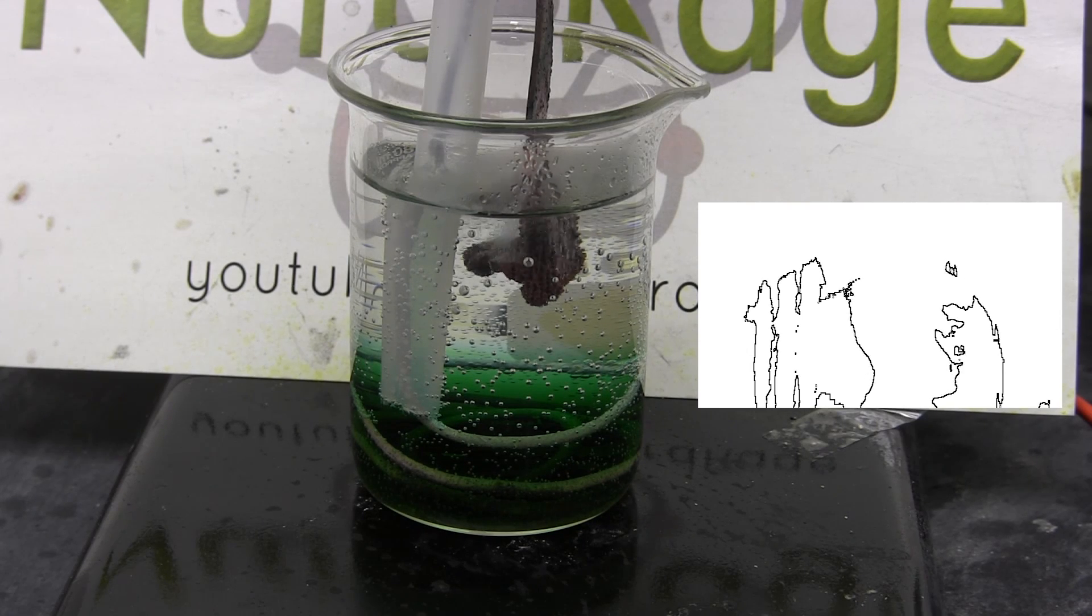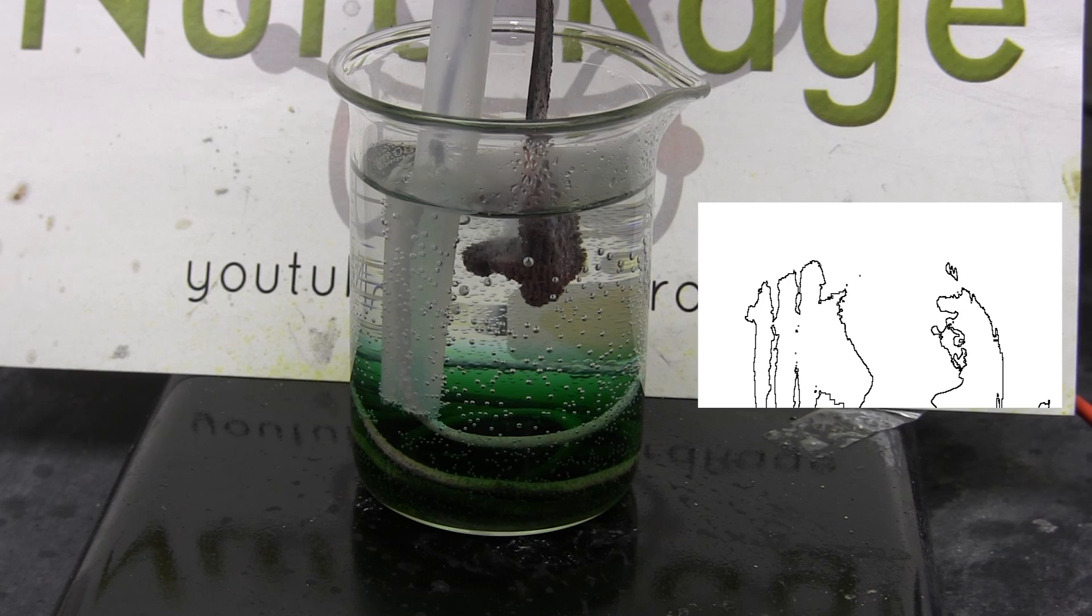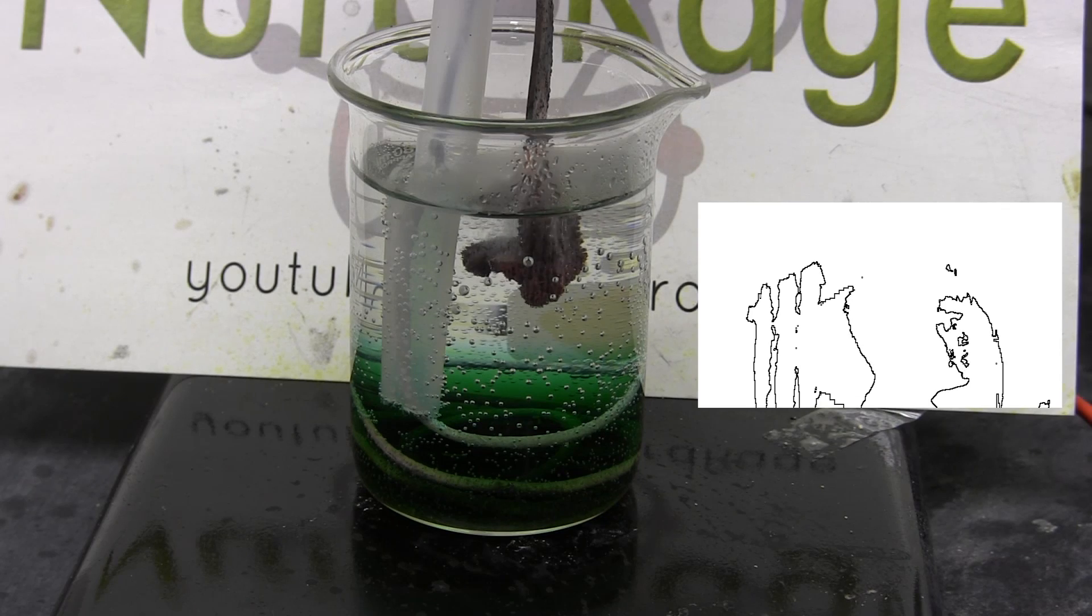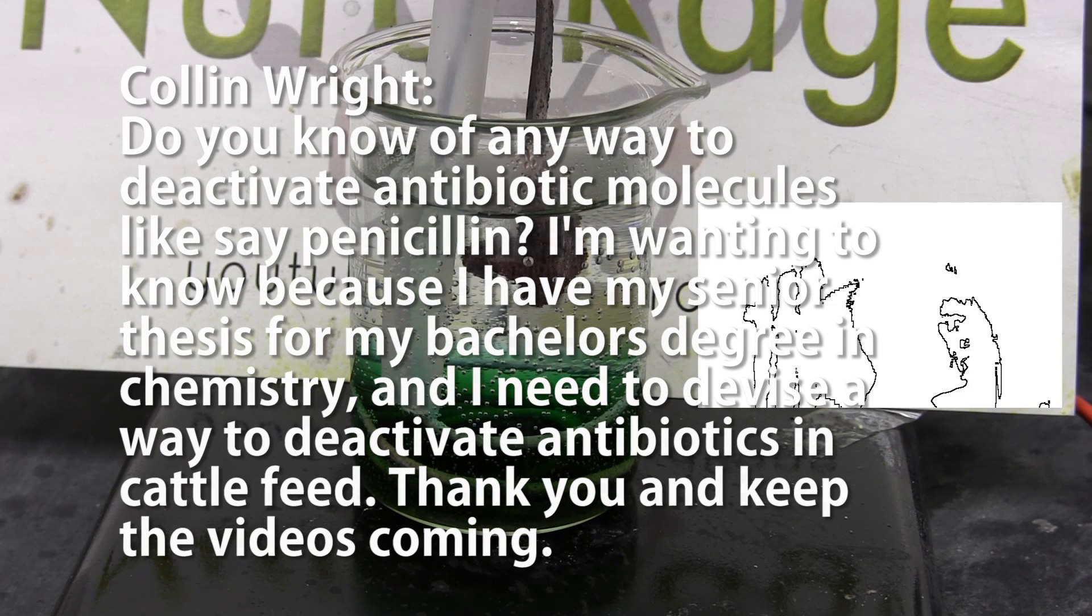Now I'm grossly oversimplifying my explanation here as the other minerals in the cement also play a role and you can get even more complex mixtures of hydroxides, oxides, carbonates, sulfates and others. But the calcium carbonate to calcium oxide and hydroxide is the main one. Okay, next question.